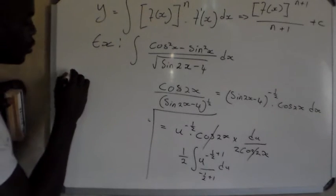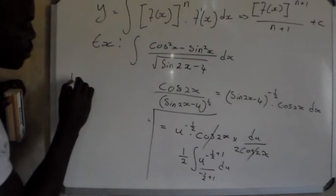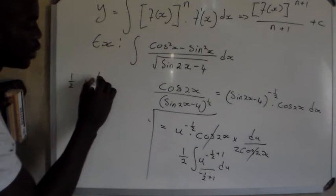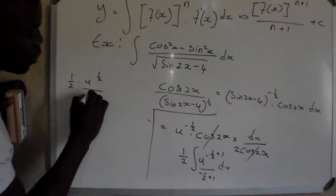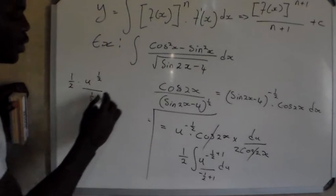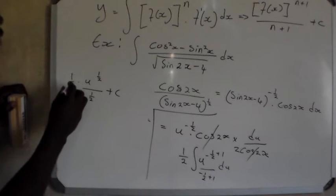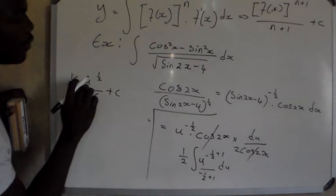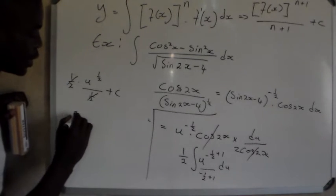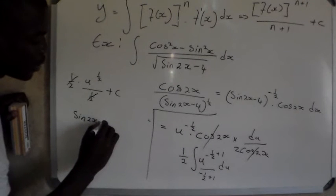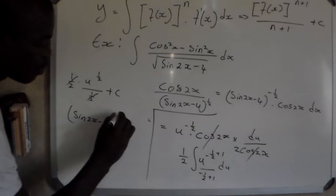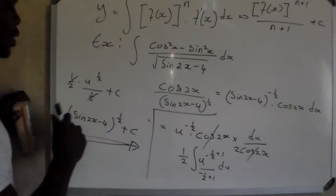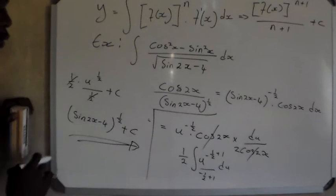Our final answer: we have one-half multiplied by u to the power negative one-half plus one, divided by one-half plus one. The one-half in the numerator and the one-half in the denominator cancel each other to give 1. We substitute back the value of u, which is sine 2x minus 4 to the power one-half, plus c. Alternatively, this can be written as the square root of sine 2x minus 4, plus c.